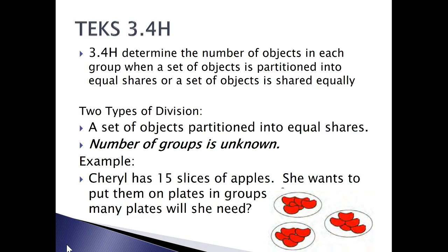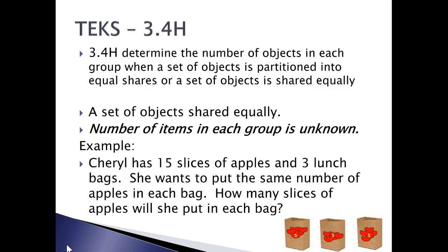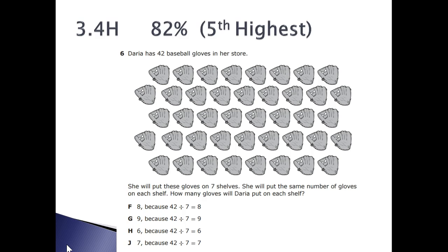We'll start with 3.4H. Notice there's two types of division. One, a set of objects is partitioned into equal shares. This means that the number of groups is unknown. An example: Cheryl has fifteen slices of apples. She wants to put them on plates in groups. How many plates will she need? The other type of division is when a set of objects is shared equally. This time, the number of items in each group is unknown. Cheryl had fifteen slices of apples and three lunch bags. She wants to put the same number of apples in each bag. How many slices will she put in each bag? This was tested on STAR 2016 and our kids did very well. Eighty-two percent, this was the fifth highest scoring item.